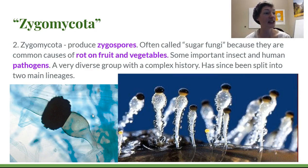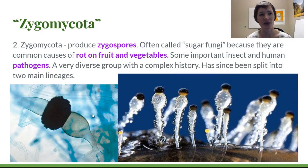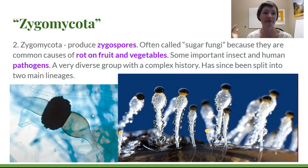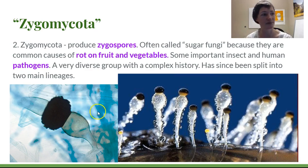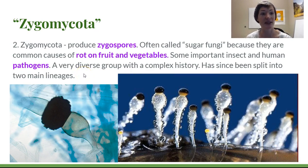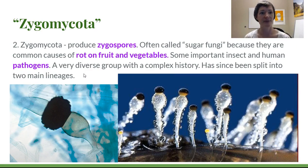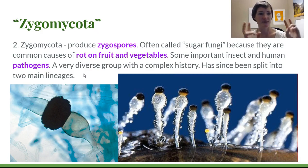There are some important insect and human pathogens in this group. One of the few fungal diseases for humans you'll hear about is mucormycosis, where people who are already immunocompromised inhale spores of this particular fungus. It can grow inside their nasal cavity and cause gangrene of the face — it's quite severe. The group is very diverse with a complex history and has since been split into several lineages, including one major lineage of insect and arthropod parasites and another that includes the more common sugar fungi that rot fruits and grow on dung.